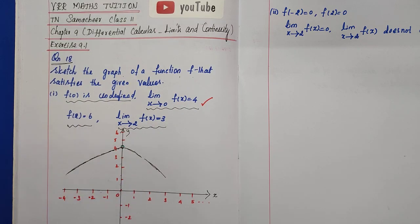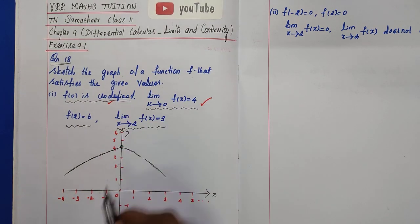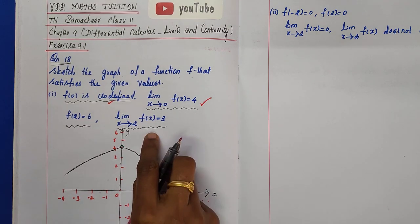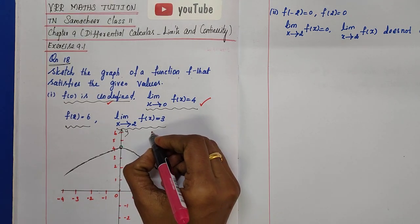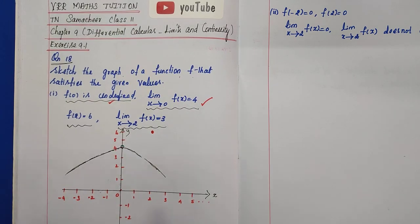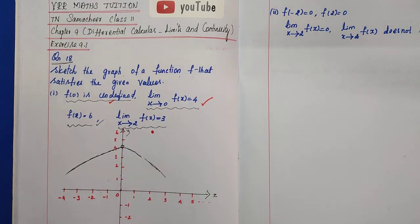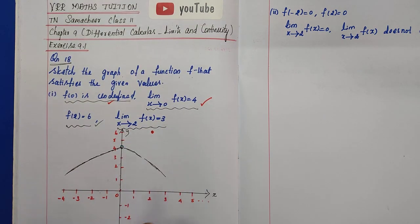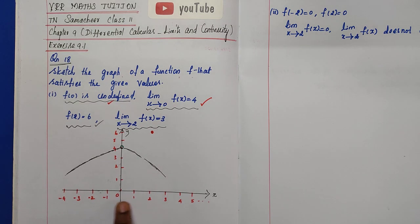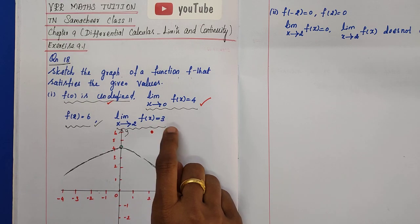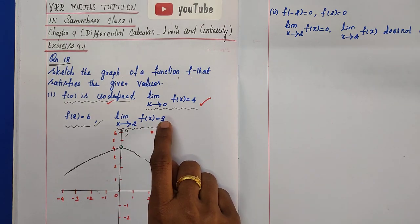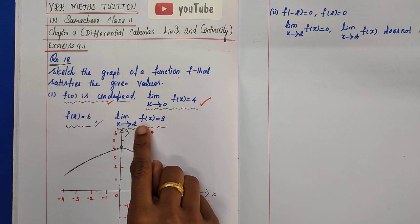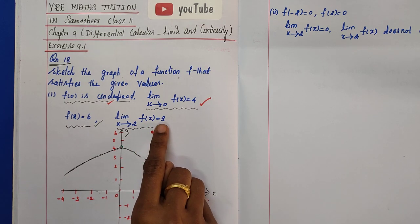Next, f(2) equals 6. At x equals 2, the function takes the value 6 — this is marked as a filled pointer on the graph. And the last condition: limit as x tends to 2 of f(x) equals 3. So as x approaches 2 from both left and right, f(x) approaches 3.